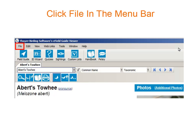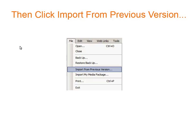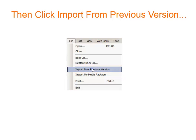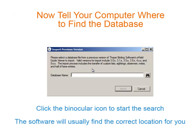Start by clicking File in the menu bar. Then click Import from Previous Version. Click the binocular icon to locate the database from your previous version.